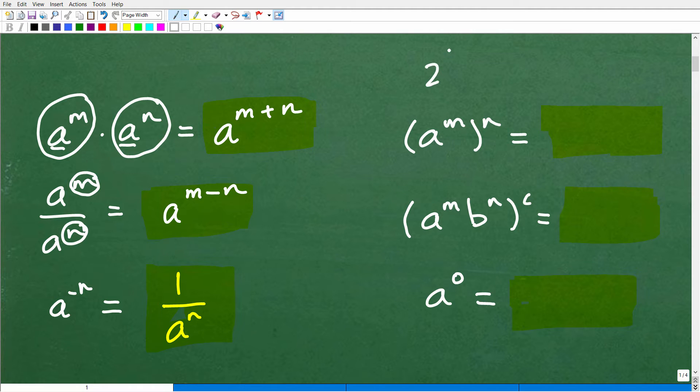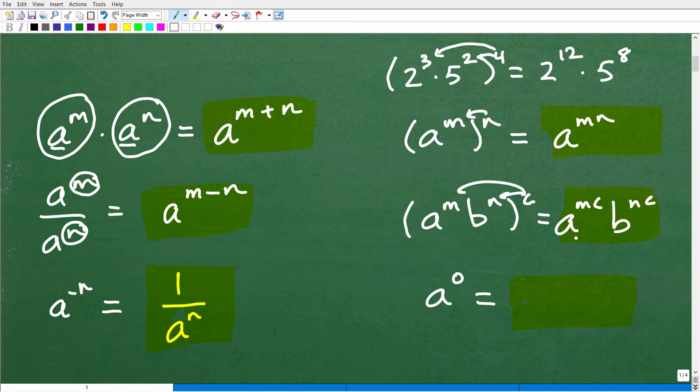How about a power to a power? Something like 2 cubed to the 5th. We have a power to some outside exponent. Well, that's just going to be equal to a to the m times n. You just distribute that outside exponent to the inside exponent. So in this case, this would be 2 to the 15th. How about two powers to some other outside exponent? We'd still just distribute that outside exponent to both of these. So this would be a to the mc times b to the nc. That would be something like 2 cubed times 5 squared to the 4th power. That would be 2 to the 12th power times 5 to the 8th power.